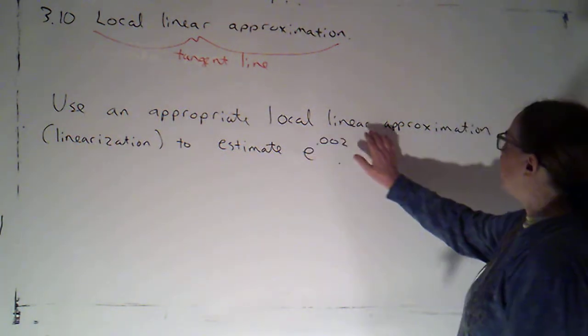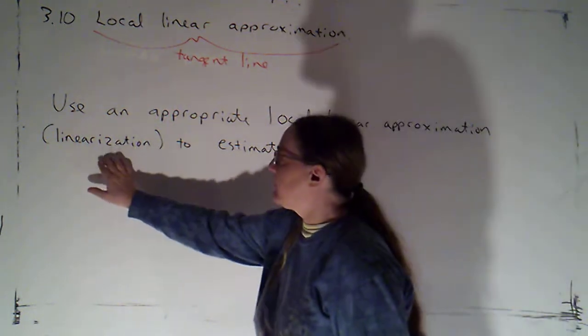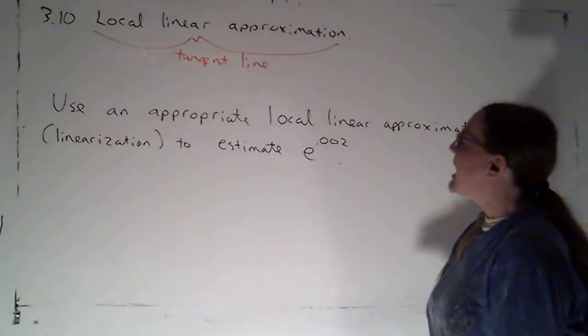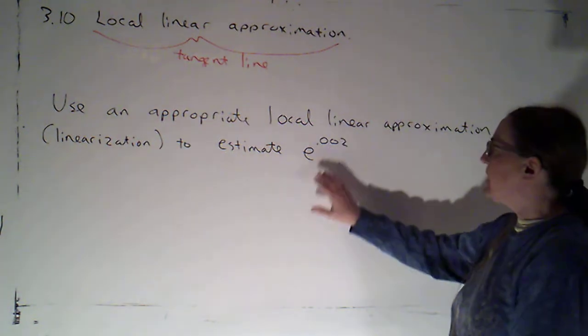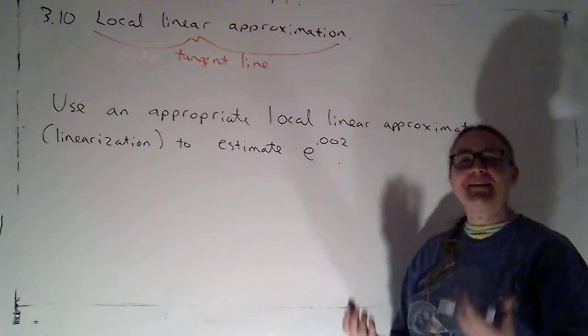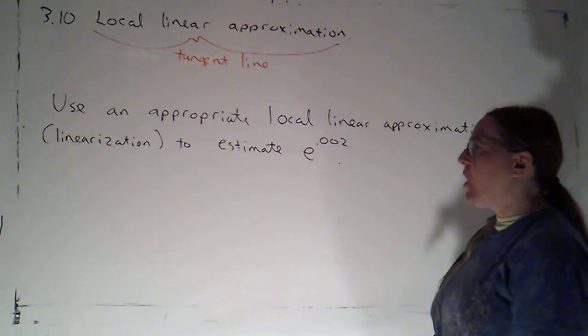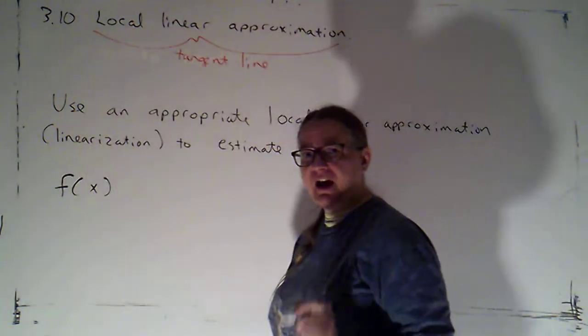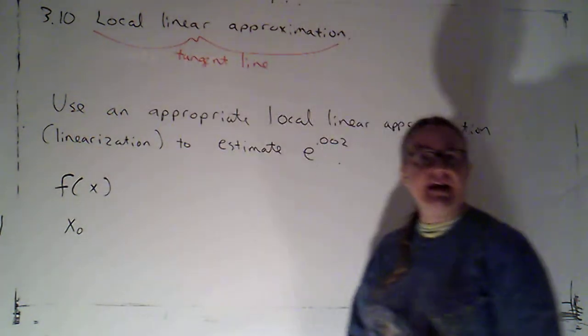So we're supposed to use an appropriate local linear approximation, that means a tangent line. I just remind you that we can refer to that as a linearization, getting used to the vocabulary. We need to estimate e to the 0.002. We're viewing this as the y value on the graph of some function. What's different is we weren't explicitly told what's the function that we're finding the tangent line of and what's the x value of the point of tangency.